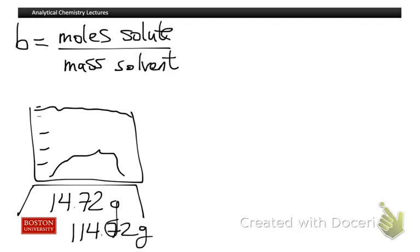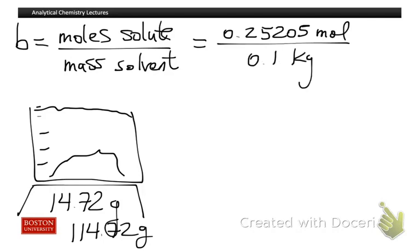Well, if that's the case, I know that I still have my 0.25205 moles of sodium chloride. But the mass of the solvent, that's easy. I'd subtract the mass total with solute and solvent from the mass of the solute alone, and I get 100 grams, or 0.1 kilograms, which gets me a molality of 2.521 molal.